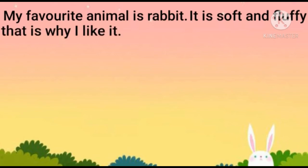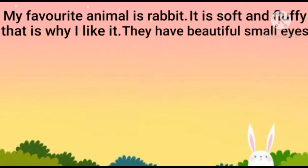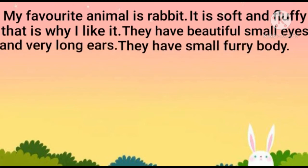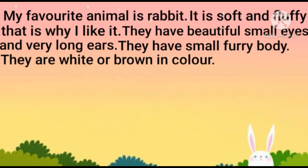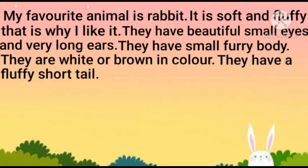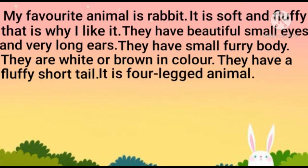Now we will move on to the second part of the paragraph and discuss its characteristics. They have beautiful small eyes and very long ears. They have small furry bodies. They are white or brown in color, and they have a fluffy short tail. Rabbit is a four-legged animal.